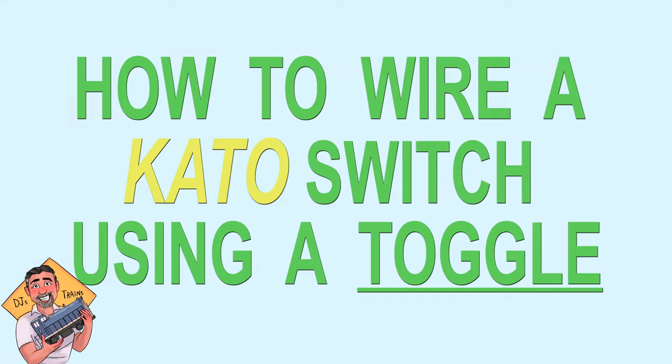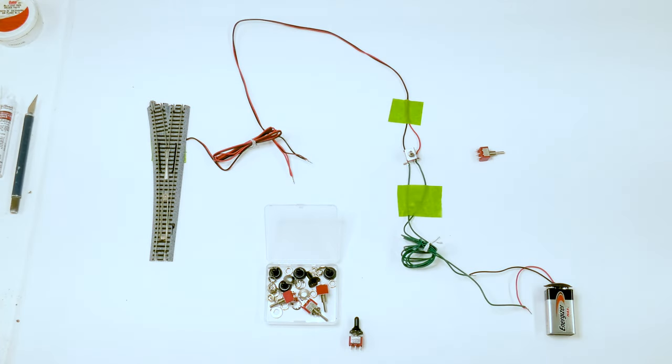Hey, this is DJ from DJ's Trains on YouTube with a real quick wiring tutorial. Here's a real simple way to wire a Kato switch to use a toggle switch and not their blue controller.